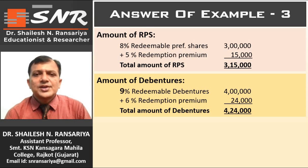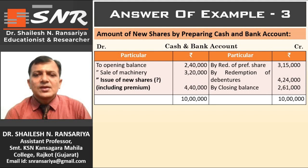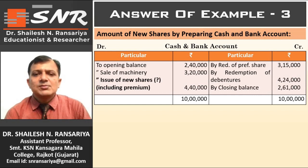Now we have to calculate the amount of new shares by preparing the cash and bank account. On the debit side: opening balance Rs. 2,40,000, sale of machinery Rs. 3,20,000. On the credit side: by redemption of RPS Rs. 3,15,000, by redemption of debentures Rs. 4,24,000, and closing balance of cash and bank Rs. 2,61,000. Total on the credit side: Rs. 10,00,000. Put it on the debit side: Rs. 10,00,000. Find the difference: Rs. 4,40,000.